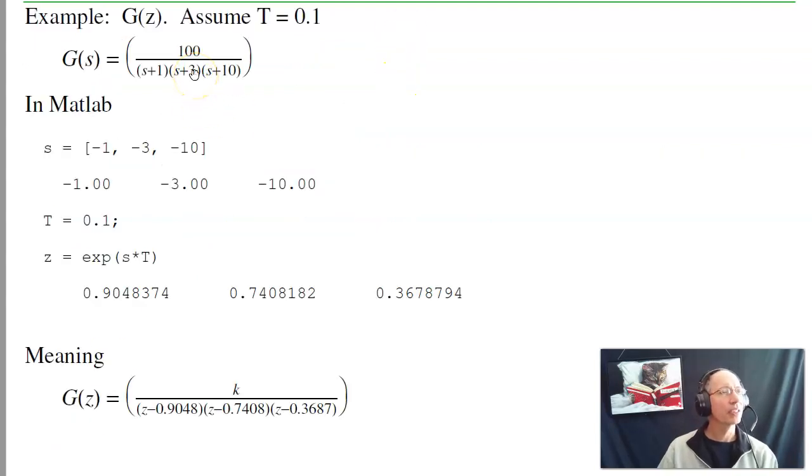To illustrate that, let's take the same system. Assuming T is 0.1, I've got poles at -1, -3, -10 in the S-plane. Converting to the Z-plane, z = e^(sT). These correspond to poles at 0.9048, 0.7408, and 0.3678. So the three poles in the S-plane map to the Z-plane as 0.9048, 0.7408, 0.3687.